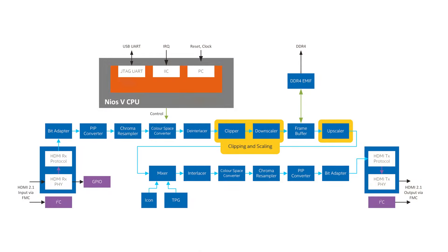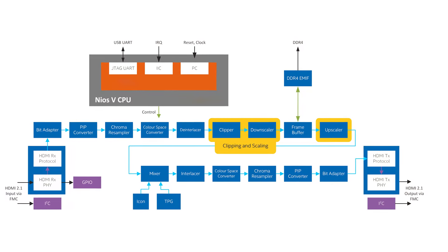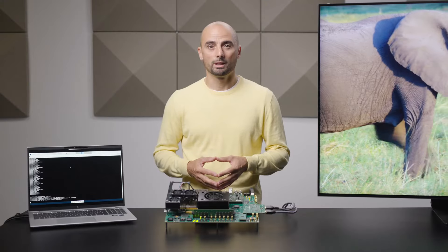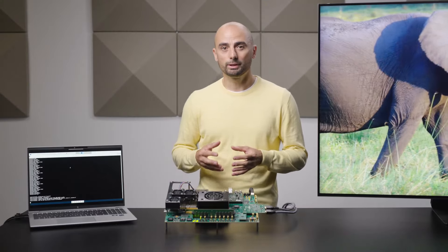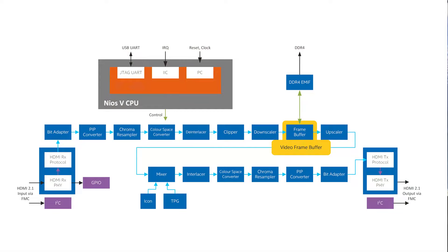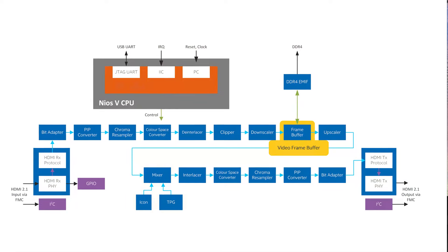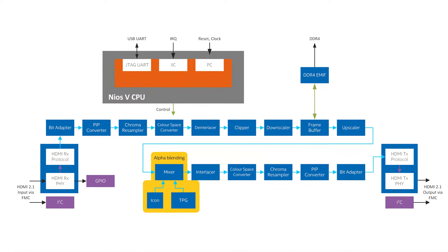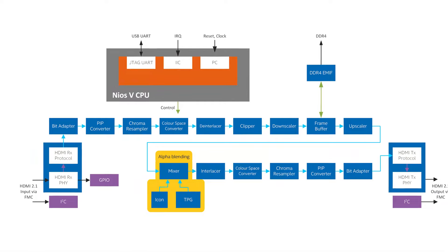Further modifications to the video streams, such as cropping and up- and downscaling, are enabled by clipper and scaler IPs respectively. The main video frame buffer is used to perform frame rate conversion, and finally the mixer IP alpha blends the input video stream with an Intel logo and test patterns produced by the test pattern generator.